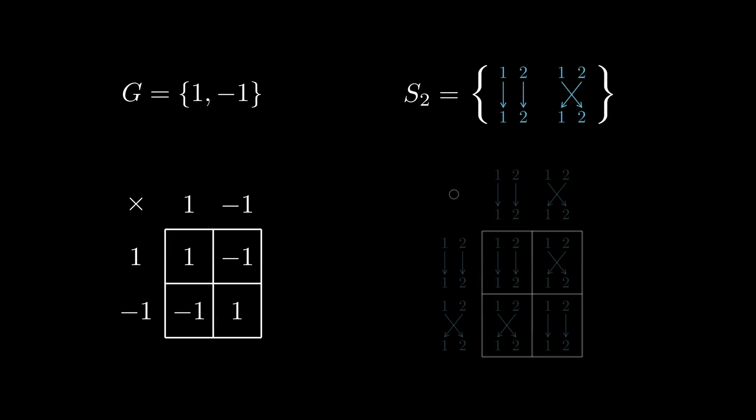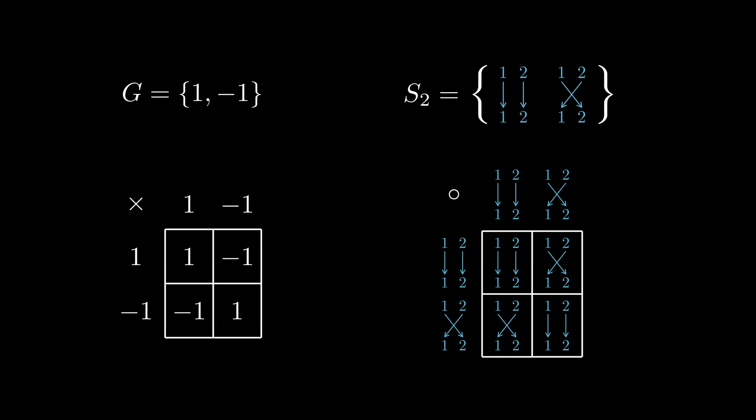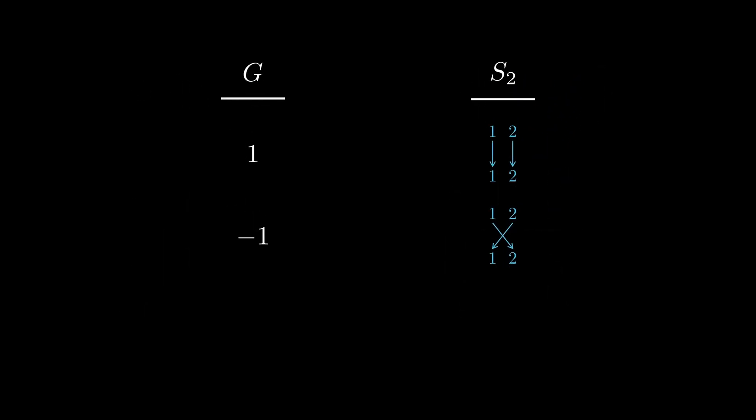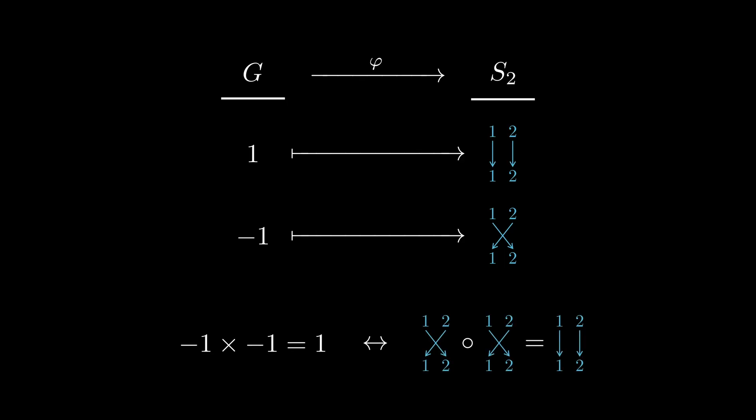To understand what we mean by 'arises from', consider the following example. Let g be the group consisting of the elements 1 and negative 1, with group multiplication just being ordinary multiplication. Compare this to S2, the permutation group we saw earlier consisting of the identity and a bijection which swaps two elements. Looking at their multiplication tables, it's clear that they're just relabelings of one another. Even though the groups were defined in different ways and the elements have different names, they're essentially the same in terms of structure. More concretely, there's a way to match up the elements on the left with the elements on the right via a bijection phi such that multiplication on the left and right agree with one another.